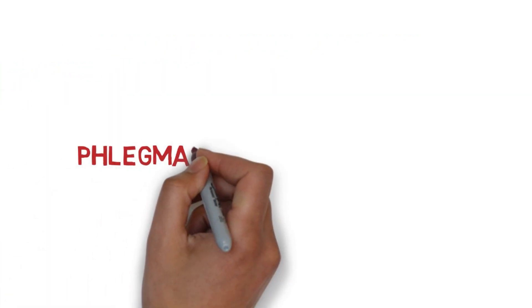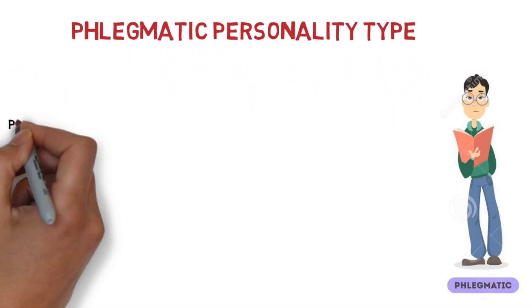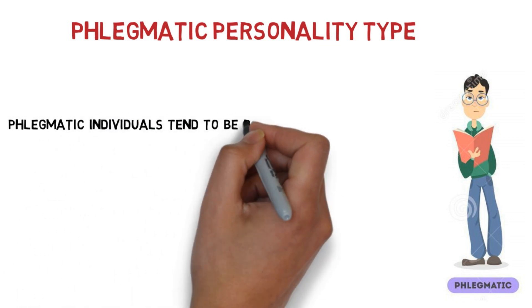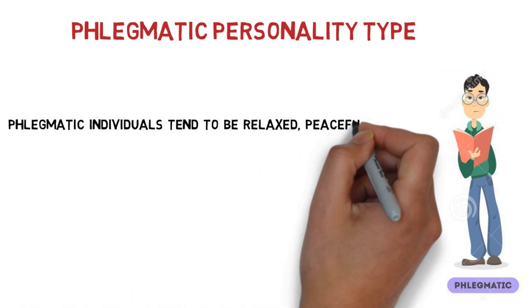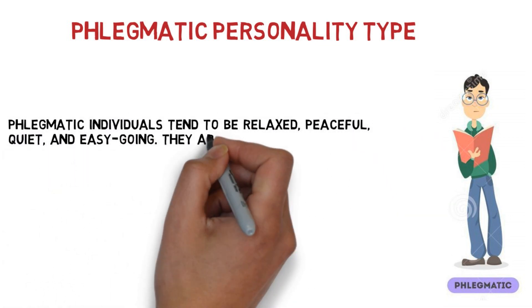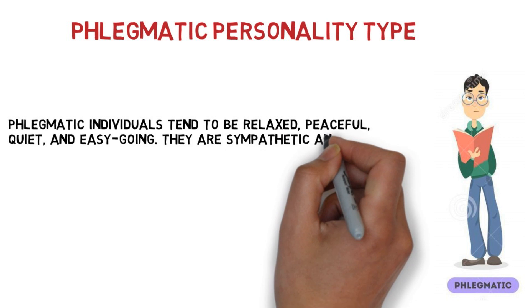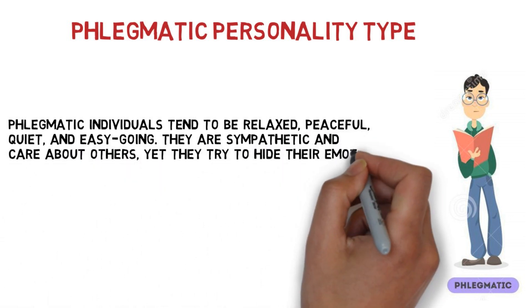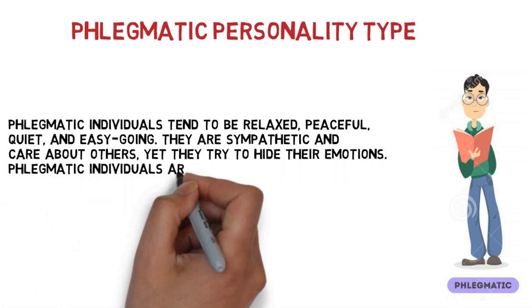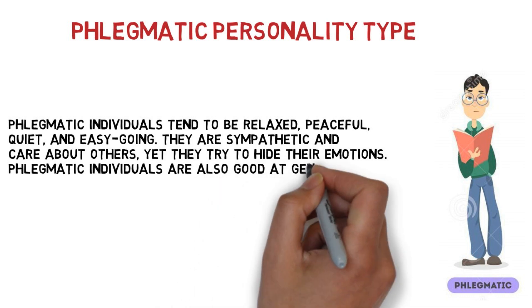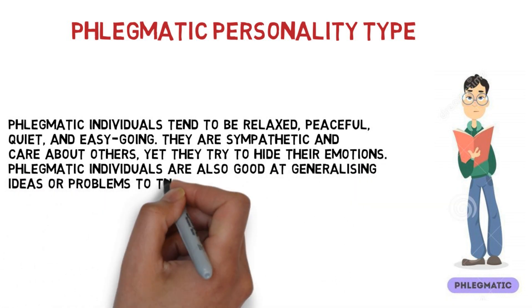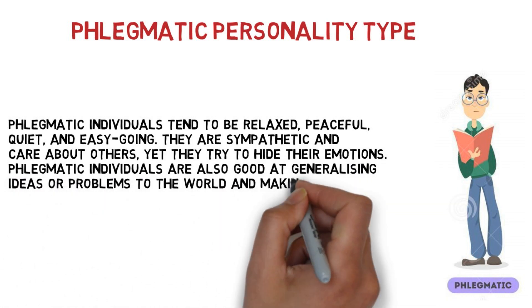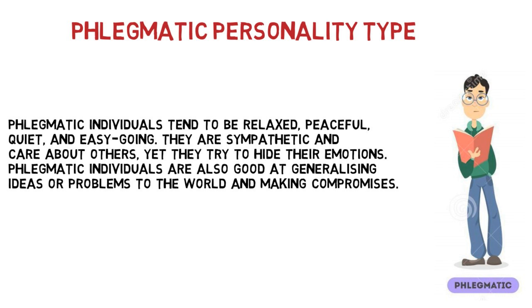And the last one: phlegmatic personality type. Phlegmatic individuals tend to be more relaxed, peaceful, quiet, and easy-going. They are sympathetic and care about others, yet they try to hide their emotions. Phlegmatic individuals are also good at generalizing ideas or problems to the world and making compromises.